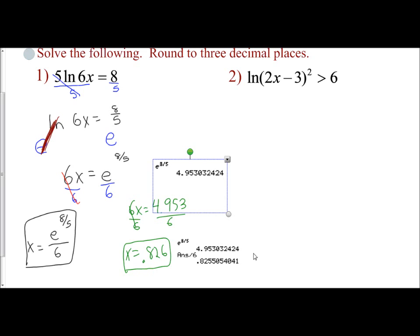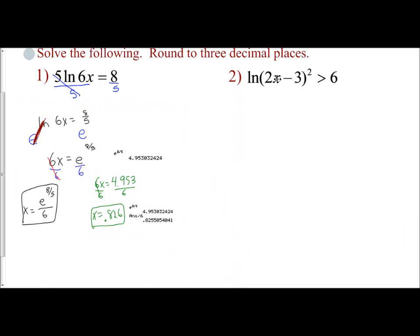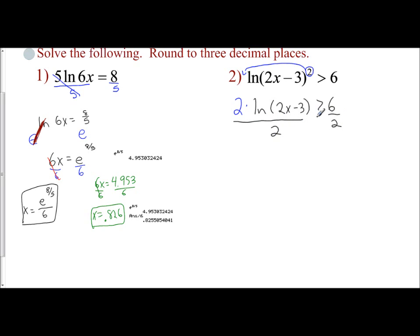Now let's do a logarithmic inequality involving natural logs. I have the natural log of the quantity 2x minus 3, squared, greater than 6. I'm going to apply the power rule here — take this exponent and bring it down as the coefficient of my natural log. So I really have 2 times the natural log of 2x minus 3, greater than 6. Now I'll get rid of the coefficient of 2 by dividing both sides by 2, which isolates my natural log.